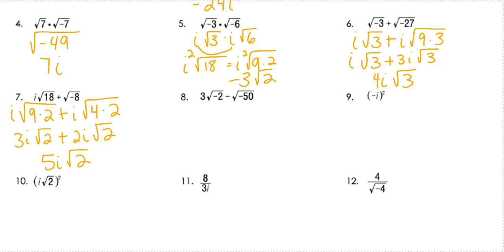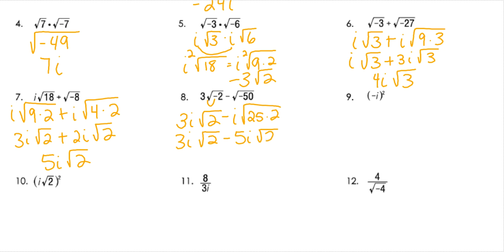Number 8 — we're subtracting. Let's simplify. This negative is just going to come out as i — can't simplify 2 at all. For the other term, we've got 25 times 2 as a perfect square, so I've got 3i root 2 minus 5i root 2, because the square root of 25 is 5. Now they're like terms that I can combine, giving negative 2i root 2.